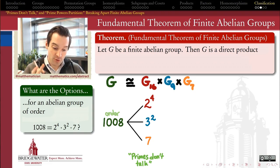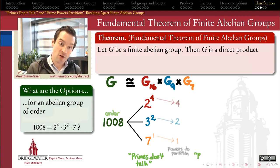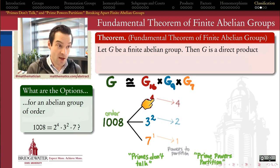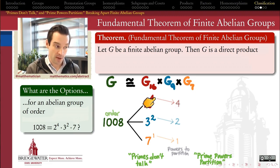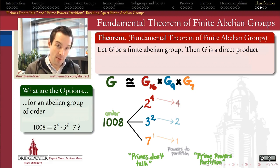So already we have a structure for our group — it's definitely a direct product of these three subgroups. But what does each of those subgroups get to look like? That's where the Prime Powers Partition theorem comes in, and it tells me I'm going to have as many possibilities as there are partitions of my exponent. For abelian groups of order 16, up to isomorphism, there are as many possibilities as there are partitions of the number 4 — we have to decide how many powers of 2 to leave separate and how many to bundle together.